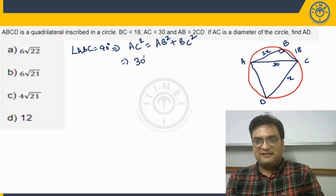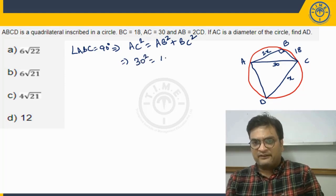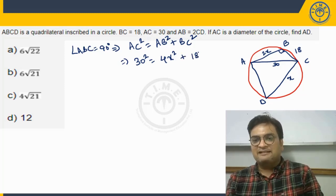AC square is 30 square, AB is 2x. So 2x whole square is, I am writing directly, 4x square plus BC square is 18 square.